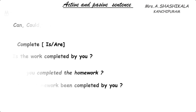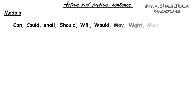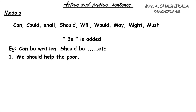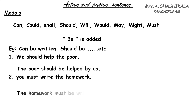Now see the modals. Modals — can, could, shall, should, will, would, may, might, must — when changed to passive voice, we have to add 'be' followed by the verb 3 form. For example: 'We should help the poor.' 'Should help' changes to 'should be helped'. The answer is: 'The poor should be helped by us.' Second example: 'You must write the homework.' The answer is: 'The homework must be written by you.'